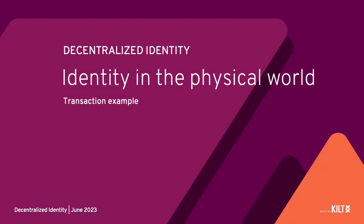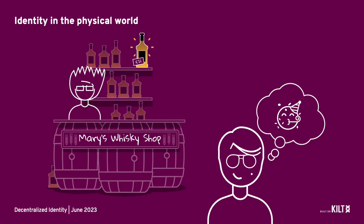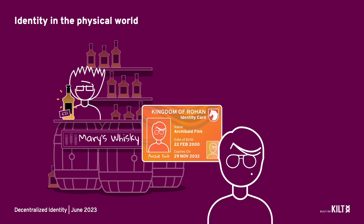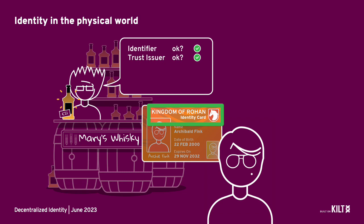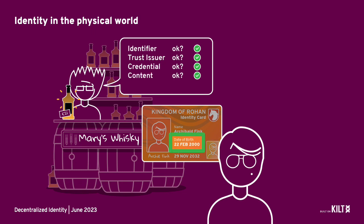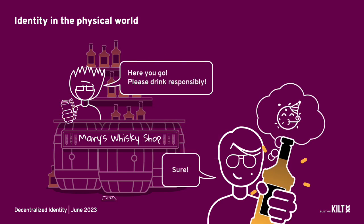Let's see how this works in the physical world. Archie wants to buy a bottle of whiskey so he heads to the best whiskey shop in town, Mary's. Because he looks young for his age, Mary wants to be sure he is legally old enough to buy a bottle. Archie opens his wallet and chooses one of his credentials to prove his date of birth. Mary can see his photo matches his face — his identifier. She trusts the entity that issued the card and can see the verification that it is an official credential. It shows that he is legally old enough to buy the whiskey and the credential is still valid. So she knows she can happily sell him his bottle of whiskey. And the government that issued the ID card doesn't need to know every time Archie uses it to buy alcohol.